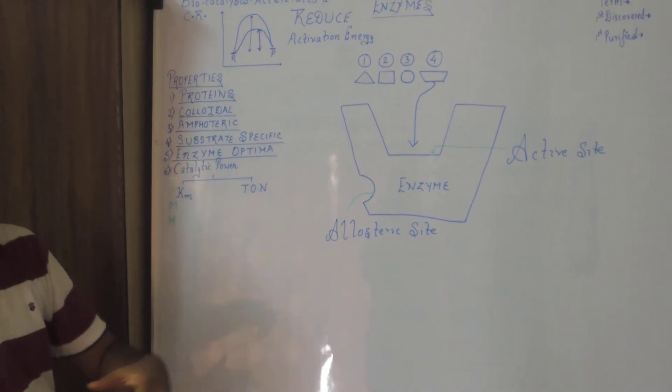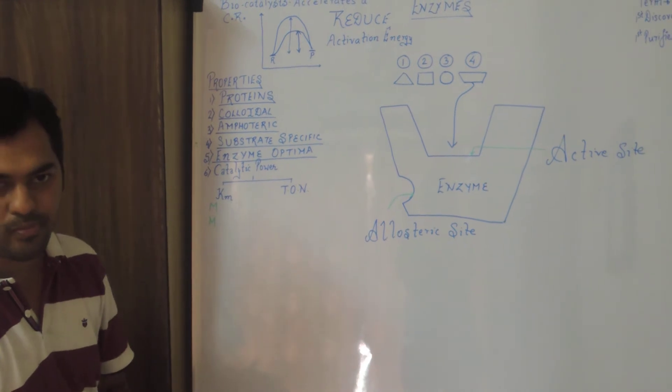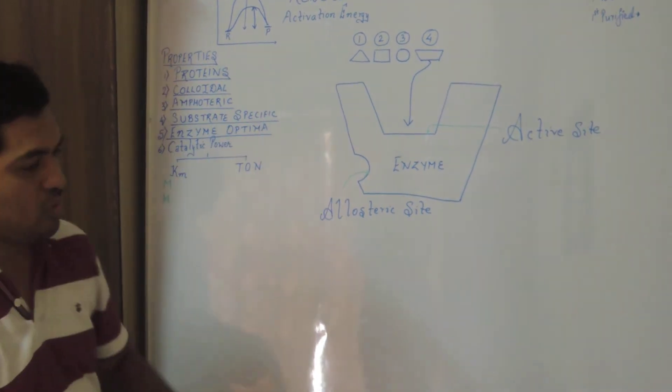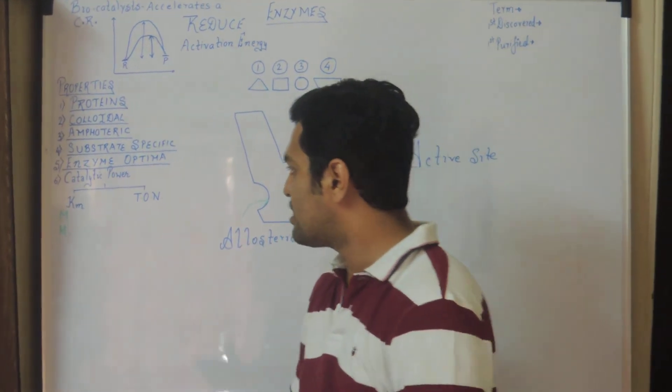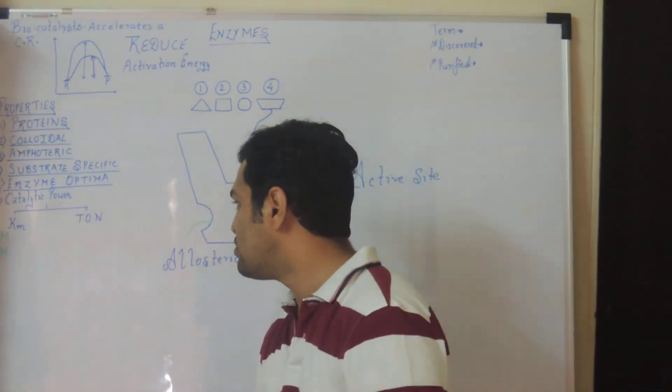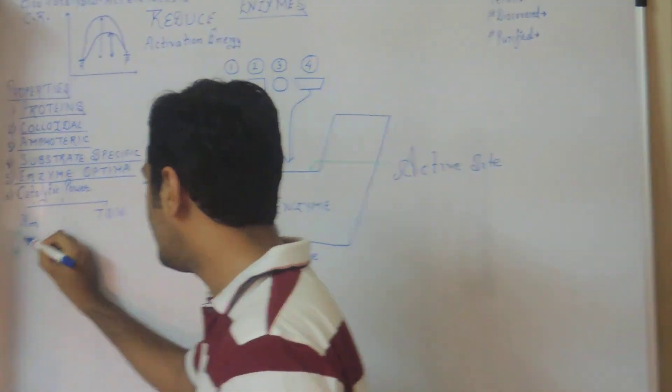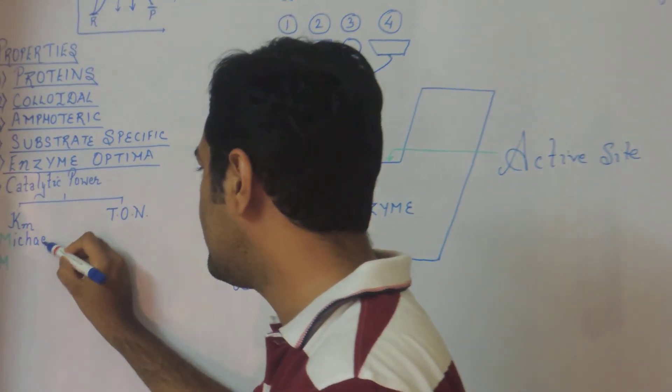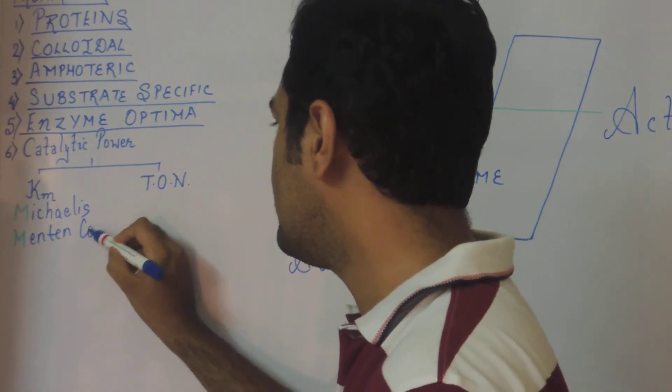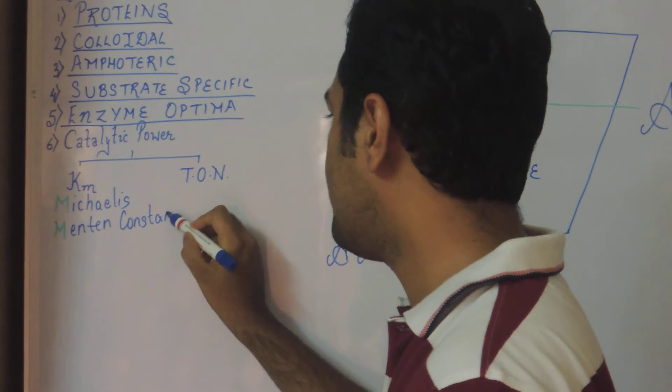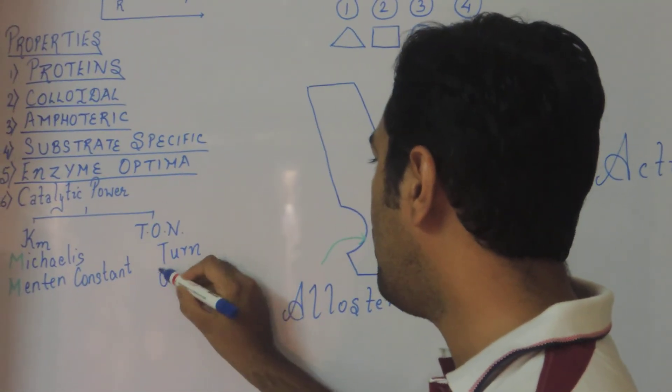Lastly, the efficiency of enzyme is described by a property known as catalytic power. That is how much amount of reactant can be converted into product. So there are two such properties which can describe the efficiency. One of them is known as KM. Another is known as TON. What is KM? KM is Michaelis Menten Constant. And the other property is TON, that is known as turn over number.